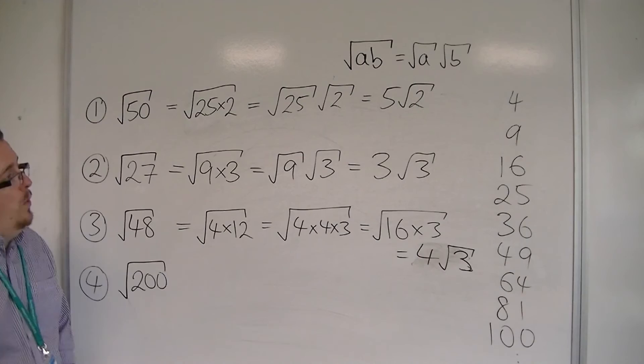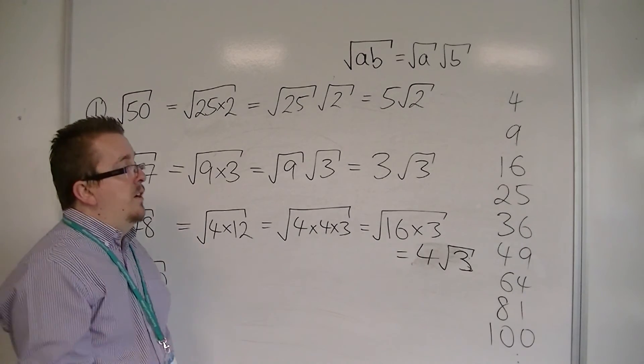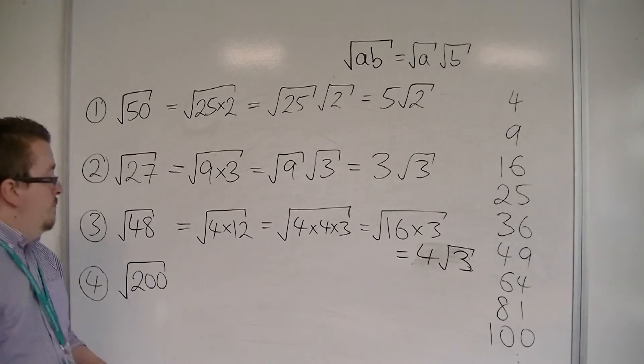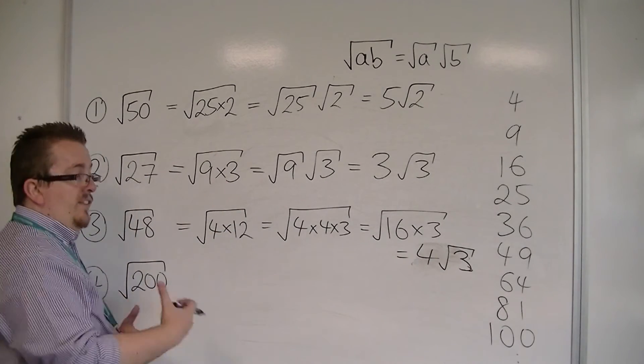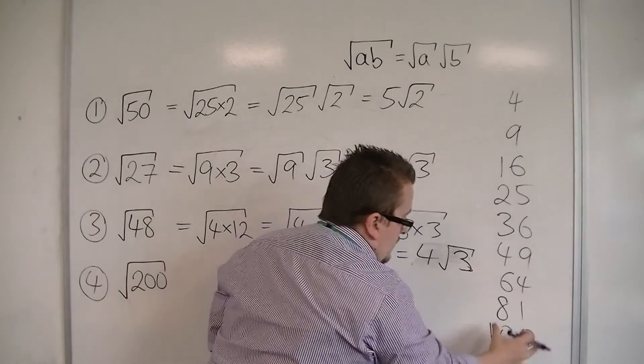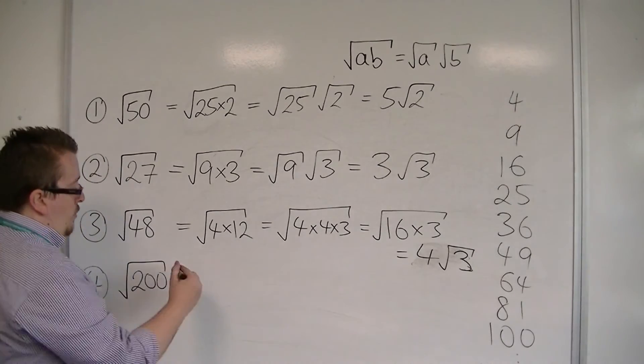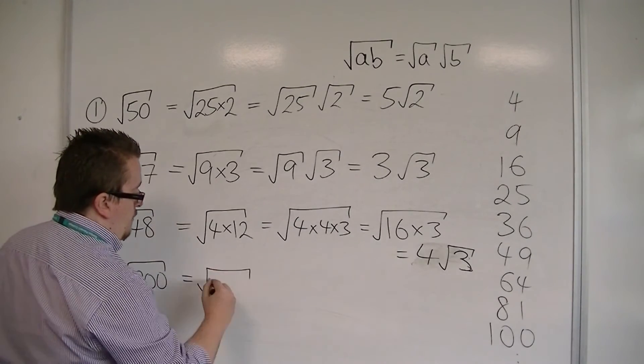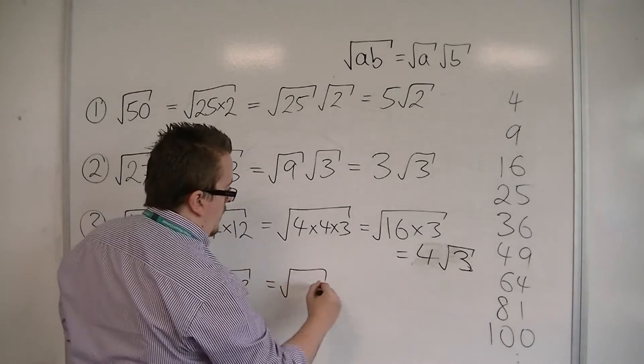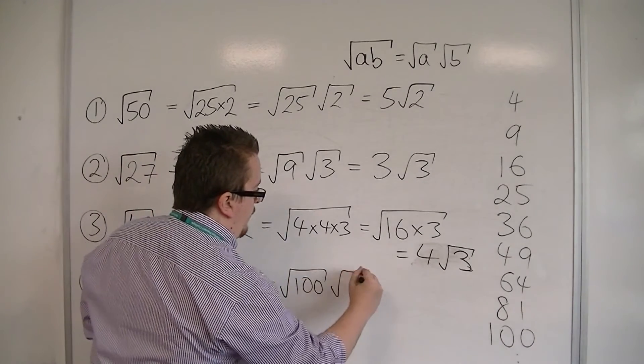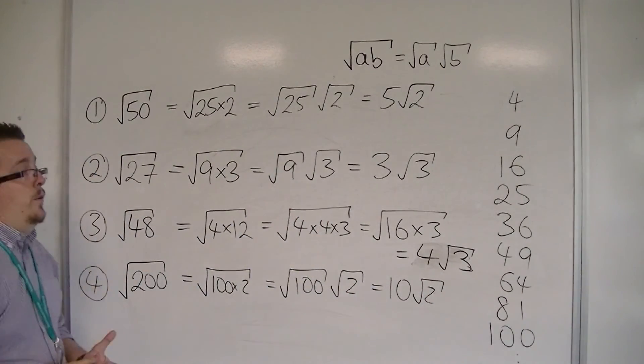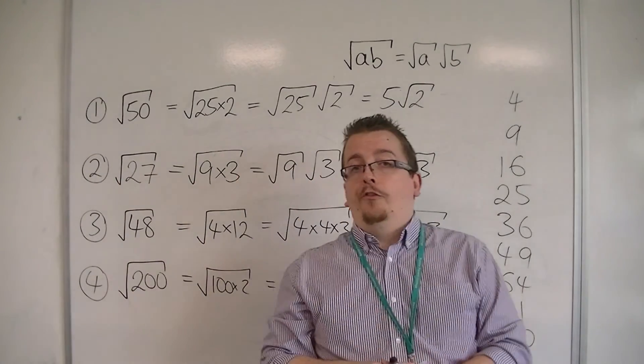For the last one, root 200, once again, you might go, well, I know 4 goes into it. I know that 25 goes into it. But then you should always be thinking, well, is there a larger square number that goes into it? And the larger one is the 100. So I can write this as the square root of 100 times 2, which will be square root of 100 times by the square root of 2. So that's 10 root 2. And that is how we can simplify those four.